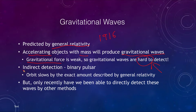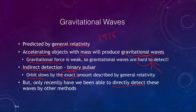Early on there was an indirect detection in terms of a binary pulsar — two neutron stars orbiting each other. We can determine their orbits, and their orbit is slowing because they are giving off gravitational waves. Energy has to be conserved, so if gravitational waves are being given off, that energy has to come from somewhere in the system. The orbit was found to slow by the exact amount that general relativity described. However, it was only recently that we've been able to directly detect these gravitational waves.